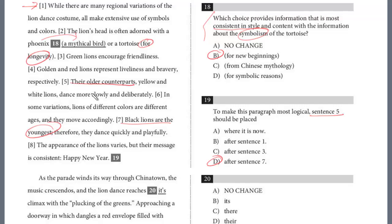And D is definitely the better choice here. So the answer is seven. We want to move this after seven. So black lions are the youngest, therefore they dance quickly and playfully. Their older counterparts more slowly and deliberately. That was a pretty straightforward question, number 19.